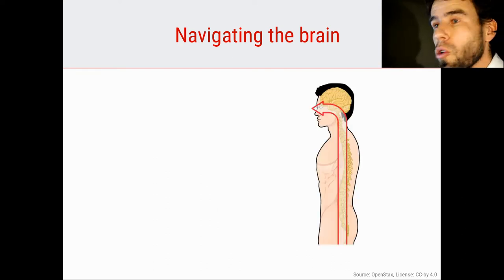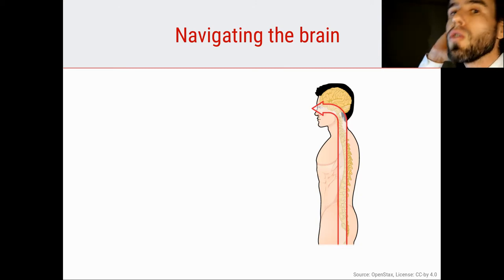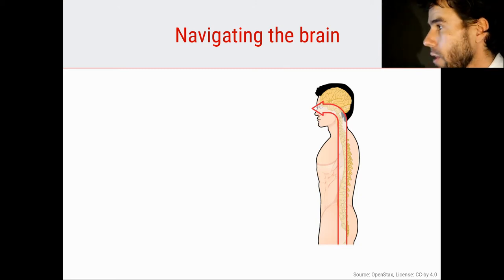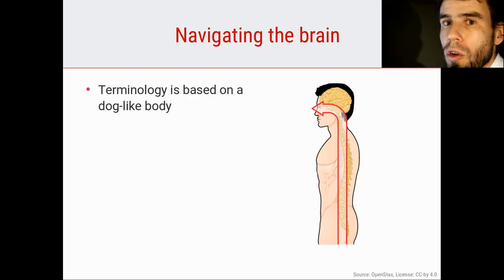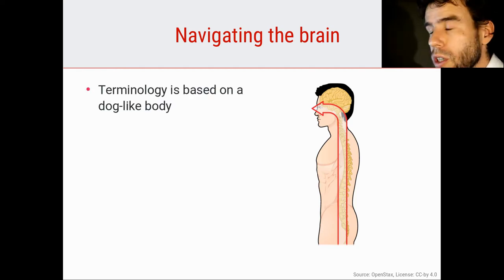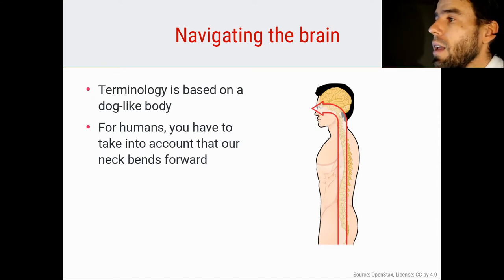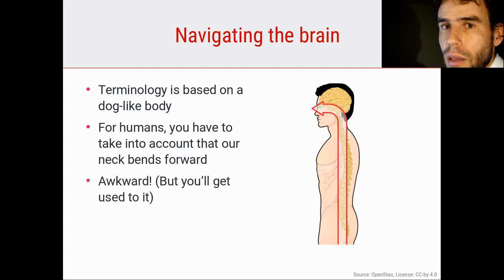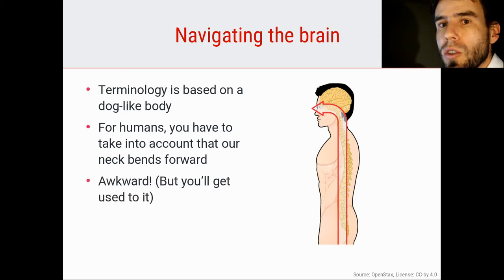The human body is curved compared to that of the dog. Our neck is curved forward, as you can see here in this picture. And because the terminology that we use is based on a dog-like body, you have to take into account for humans that our neck bends forward. This can be a little bit awkward, as we will see, but you will get used to it.